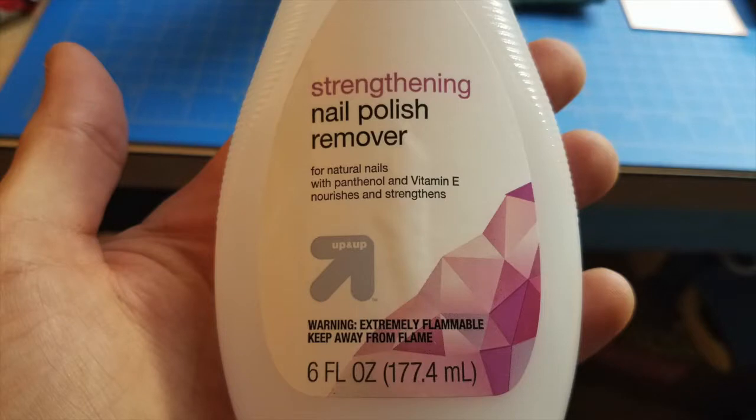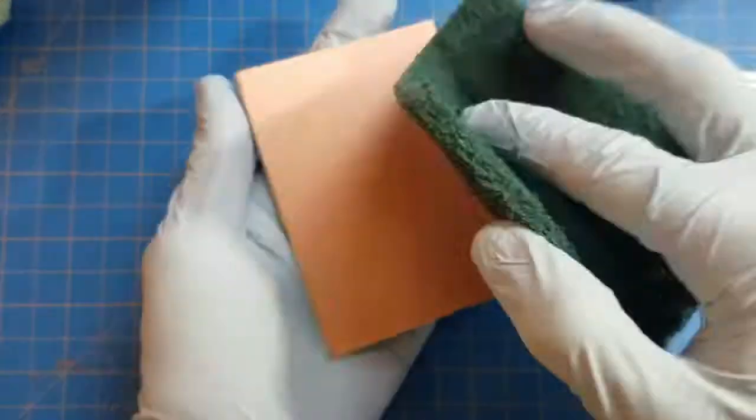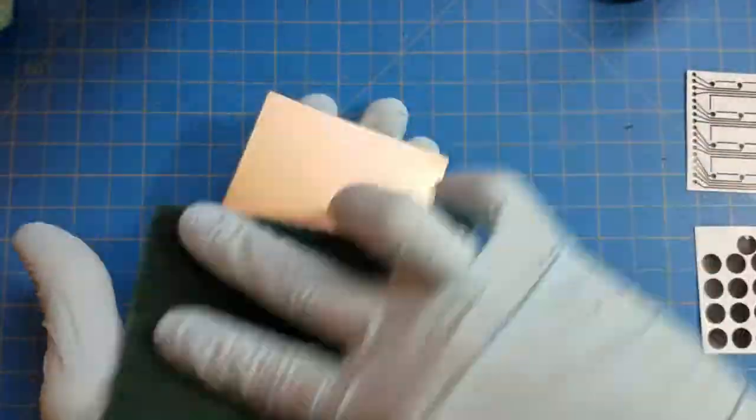Here's a close-up look at that cheap nail polish straight from Target. Acetone is the main ingredient. So for your first step, you're just going to prep your board, wipe it down with your scotch bright pad or your steel wool.